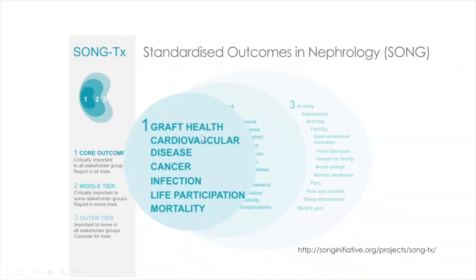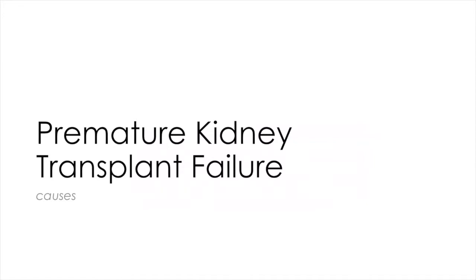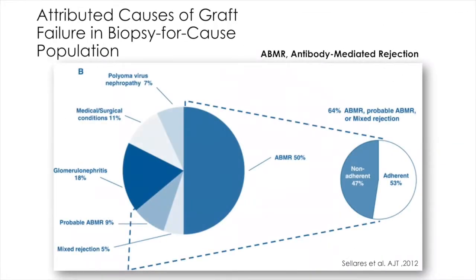So what compromises the success of a kidney transplant and shortens the survival of an allograft? While many factors can contribute, the overwhelming cause of graft loss remains rejection. The authors studied the attributed cause of graft failure in a biopsy-for-cause population, and the large majority of patients experienced graft loss secondary to antibody-mediated rejection, probable antibody-mediated rejection, or mixed rejection.